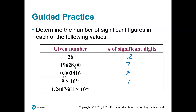A more complex number in scientific notation indicates all of those digits carry precision — they're all significant. Counting them: one, two, three, four, five, six, seven, eight digits — all significant. That's one of the reasons we use scientific notation. It eliminates ambiguity. You know exactly how many digits are significant because that's precisely what the number shows.